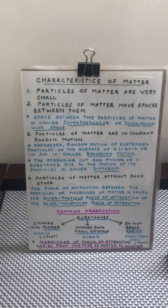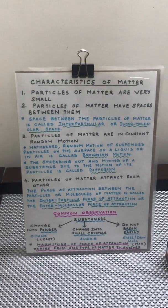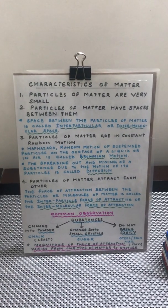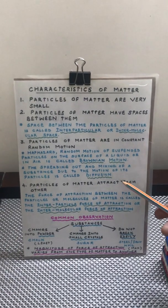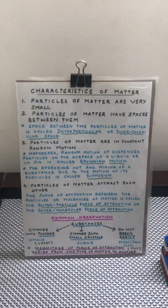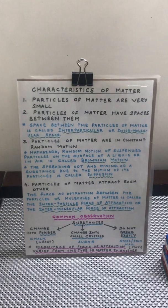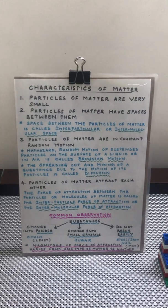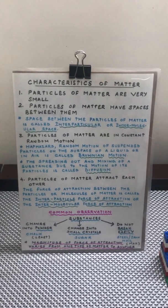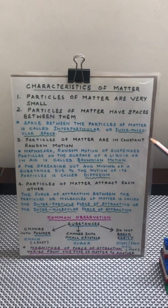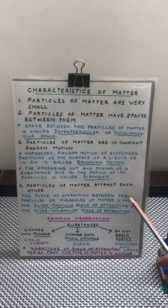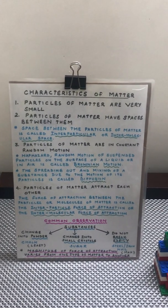you are able to get that fragrance because of diffusion — the particles are actually intermixing, and that is how you are able to get the smell. So diffusion and Brownian motion tell us that particles are in constant random motion. The fourth characteristic of matter is that particles of matter attract each other.